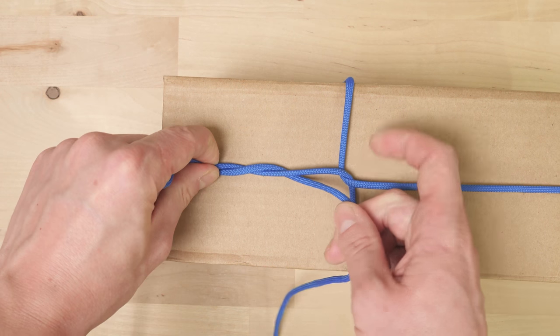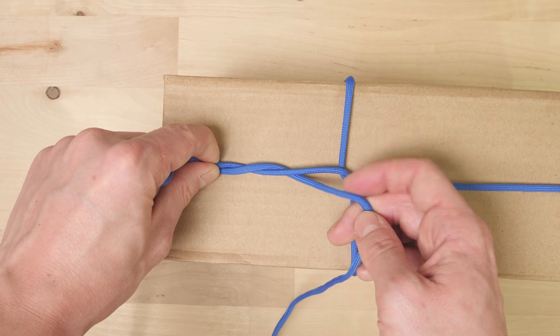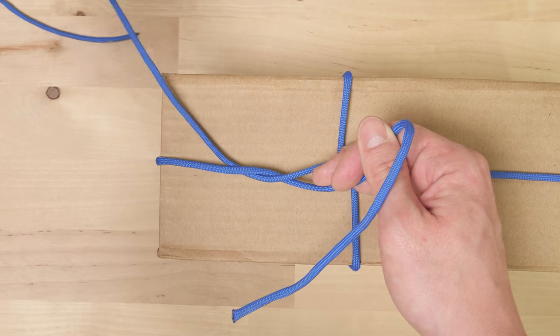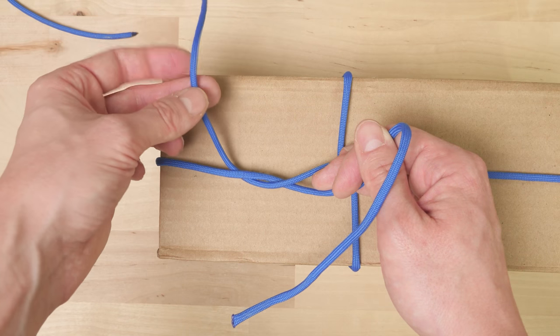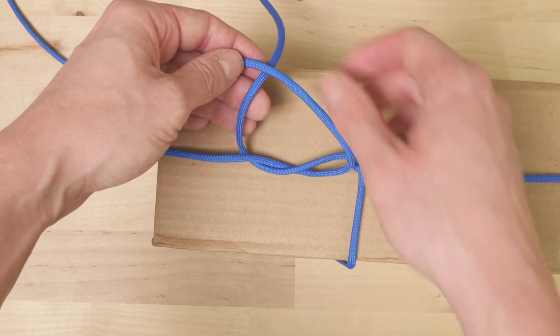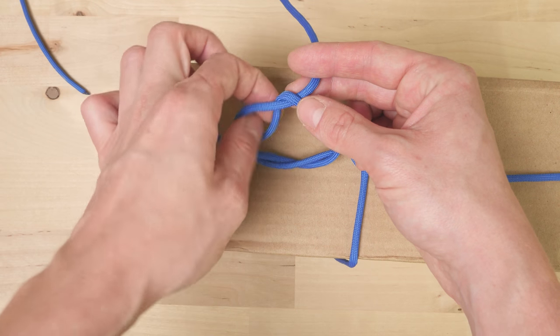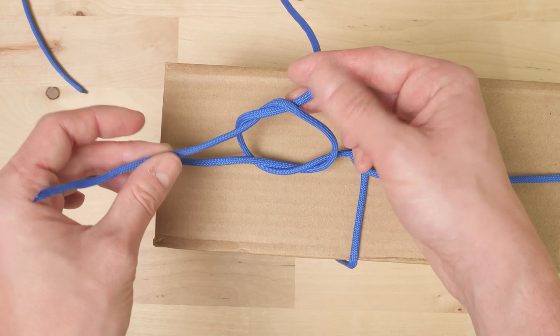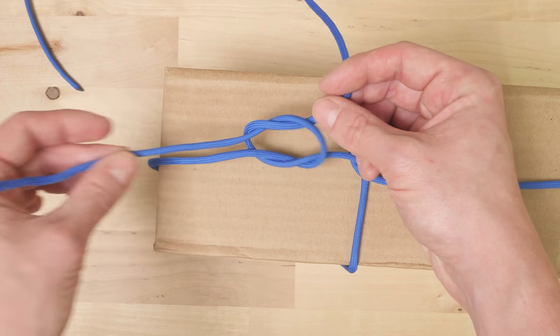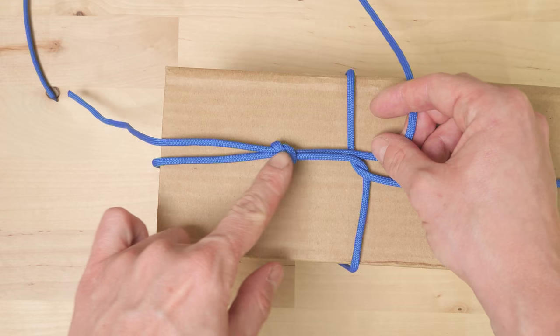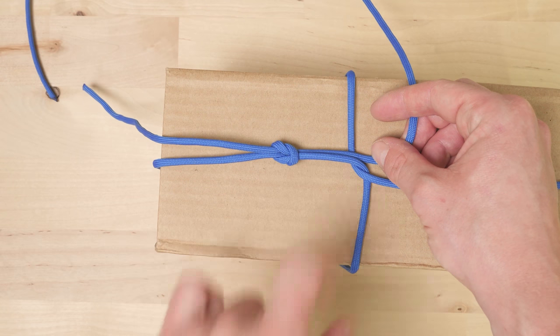Then using this strand, the one on the right, I'm going to pass over the left strand. So over, then wrap around like this, then tighten up. And what I get is a reef knot that secures the lashing.